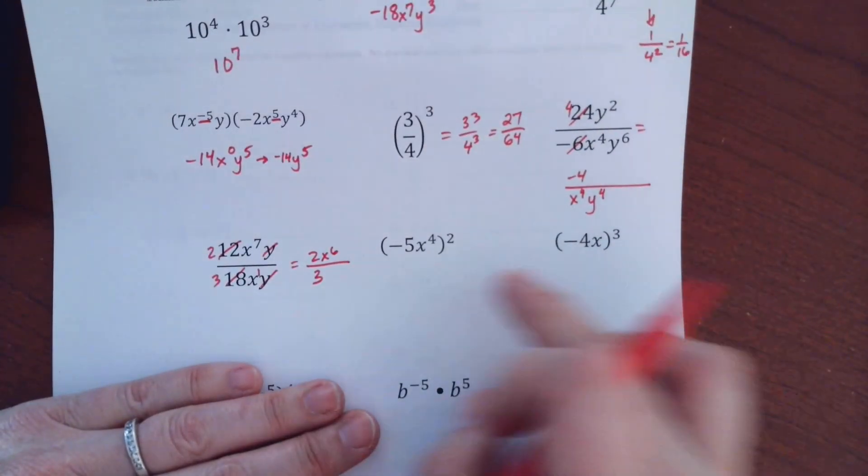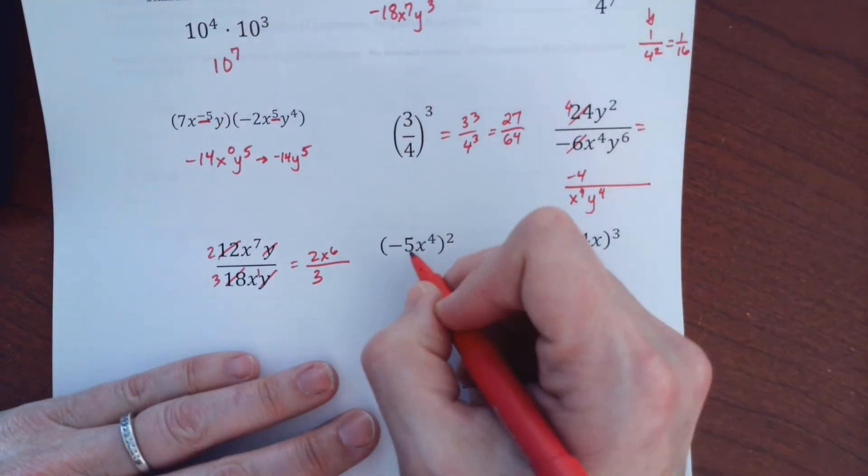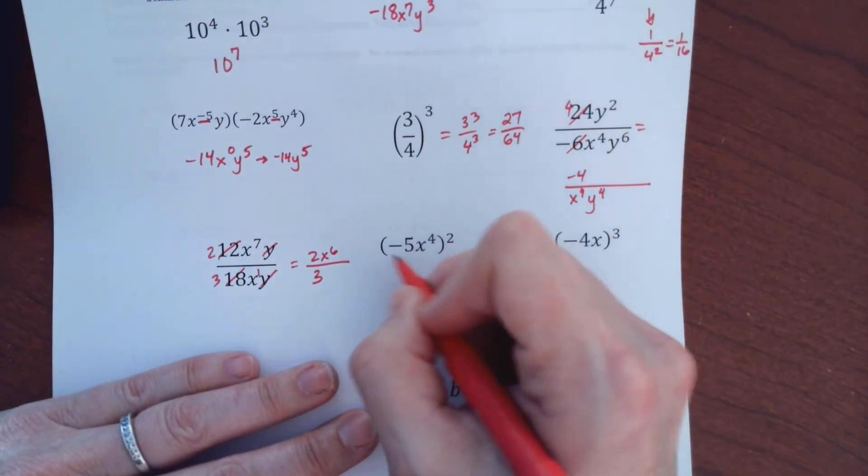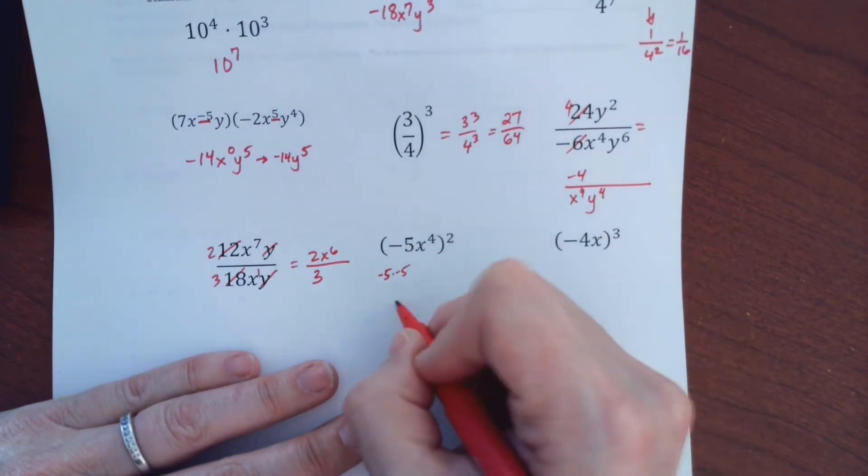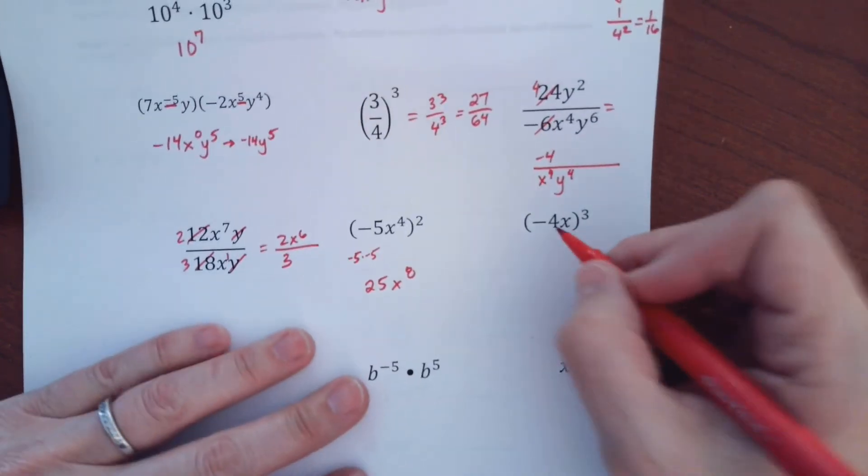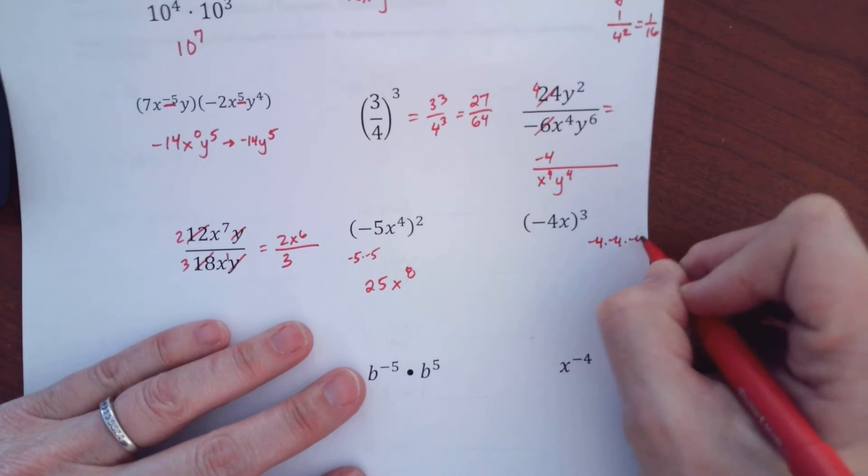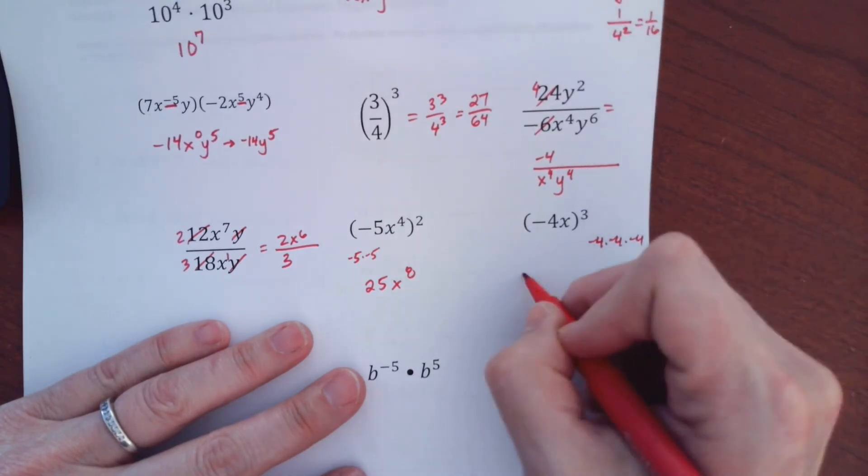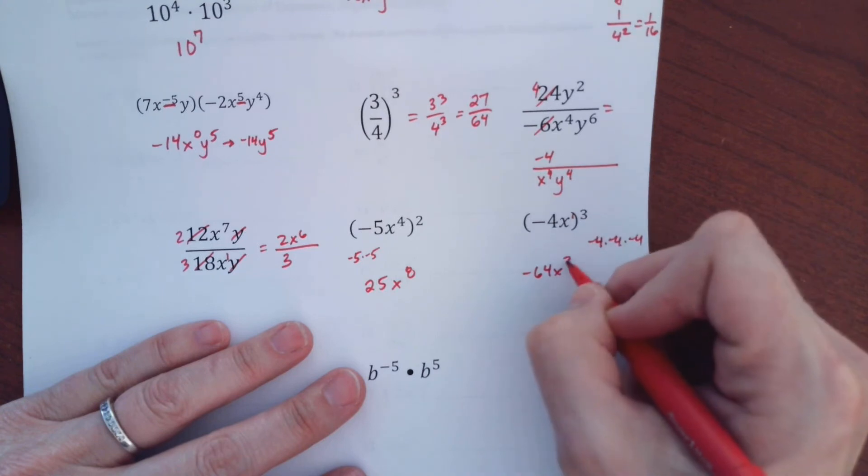These next two have parentheses with a power, so that means I'm going to be multiplying my exponents, but I'm not going to multiply 5 and 2. I take negative 5 to the second power, so that means negative 5 times negative 5. So 25, X to the eighth. Negative 4 to the third, so that means negative 4 times negative 4 times negative 4. That would be a negative 64. And then X has a 1, so 1 times 3 is 3.